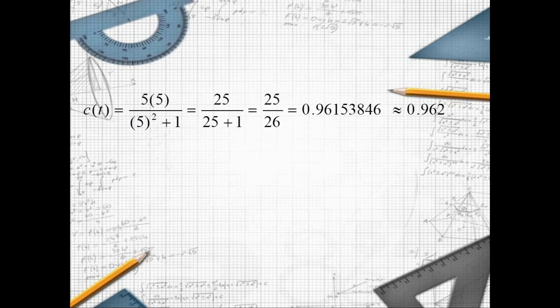Dividing 25 by 26 gives 0.96153846. The problem requires us to round off to three decimal places, so our answer is approximately 0.962.